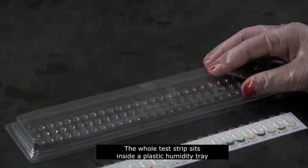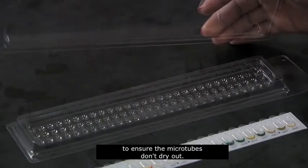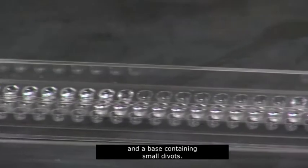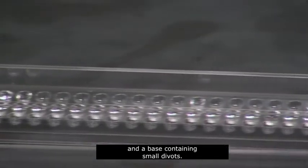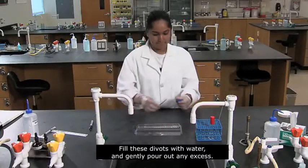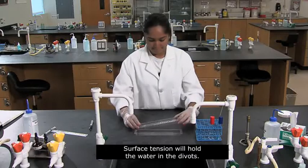The whole test strip sits inside a plastic humidity tray to ensure the microtubes don't dry out. The tray has a smooth, clear lid and a base containing small divots. Fill these divots with water and gently pour out any excess. Surface tension will hold the water in the divots.